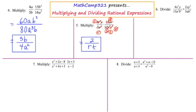Let's move to number six. We're asked to divide 4x squared y over 15a cubed b cubed, divided by 2xy squared over 5ab cubed. What's critical to remember here is that dividing by a fraction is the same as multiplying by its reciprocal. So I'm going to turn this into a multiplication problem by reciprocating the second fraction.